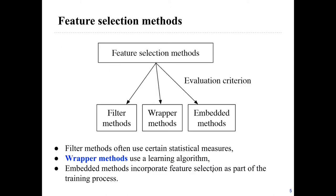Feature selection methods can be divided into three categories based on the evaluation criterion: filter, wrapper, and embedded-based methods. Filter methods use statistical measures like information gain. Wrapper methods use a specific learning algorithm like KNN. Embedded methods incorporate feature selection as part of the training process. Generally, a wrapper-based method achieves better classification accuracy, so in this work we plan to design a wrapper-based feature selection method.